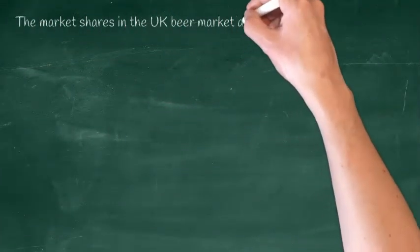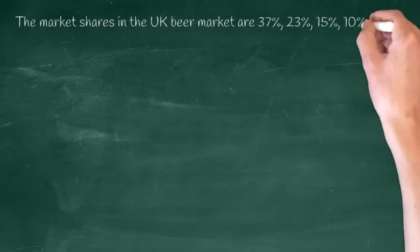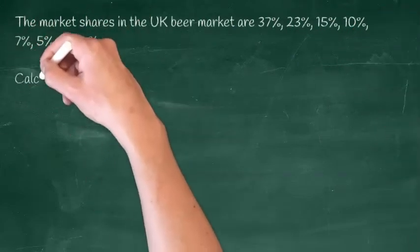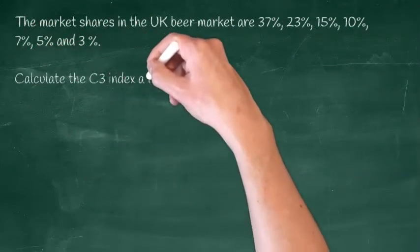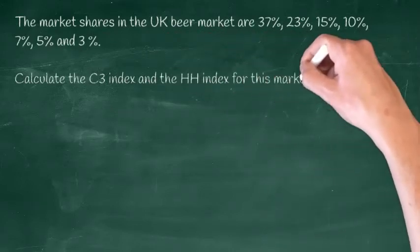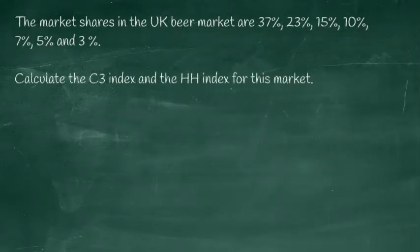OK, hopefully you get the idea. Now it is your turn. Here are some data for the UK beer industry. Can you calculate this time the C3 index and the Herfindahl index? I'll give you two to three minutes to grab your calculator and work them out.